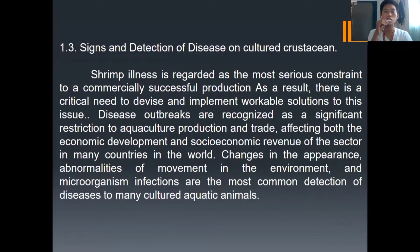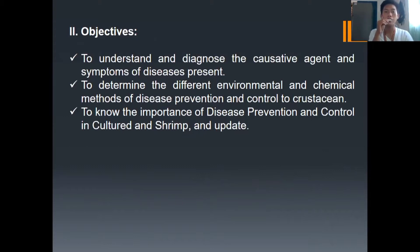For the science and detection of disease on cultured organisms, shrimp illness is regarded as one of the most serious constraints to commercially successful production. As a result, there is a critical need to devise and implement workable solutions to this issue. Disease outbreaks are recognized as a significant restriction to aquaculture production and trade, affecting economic and social revenue in many countries. Changes in appearance, abnormalities of movement, and microorganism infections are the most common detection methods for diseases in cultured aquatic animals. The objectives are: first, to understand and diagnose the causative agent and symptoms of disease; second, to determine the different environmental and chemical methods of disease prevention and control; and third, to know the importance of disease prevention and control to cultured shrimp.